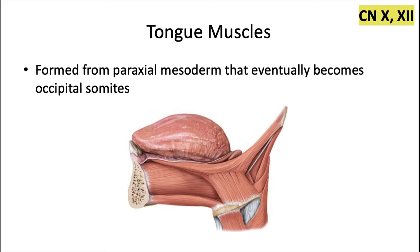The tongue muscles are formed by the paraxial mesoderm that eventually becomes the occipital somites. These muscles are going to be innervated mostly by the hypoglossal nerve, cranial nerve 12, but one of them is an exception that will be innervated by cranial nerve 10.